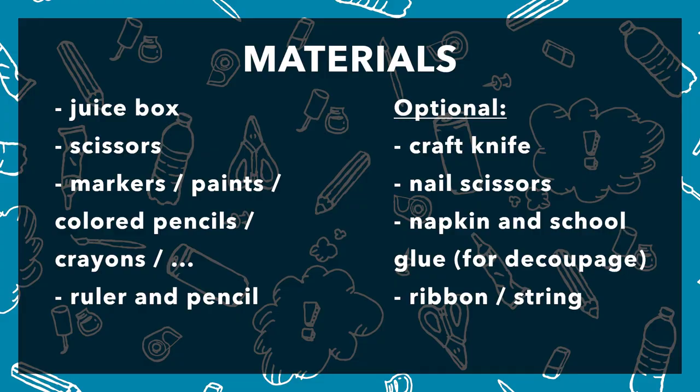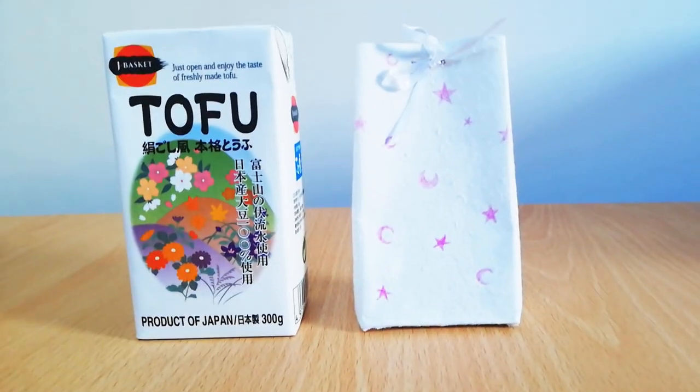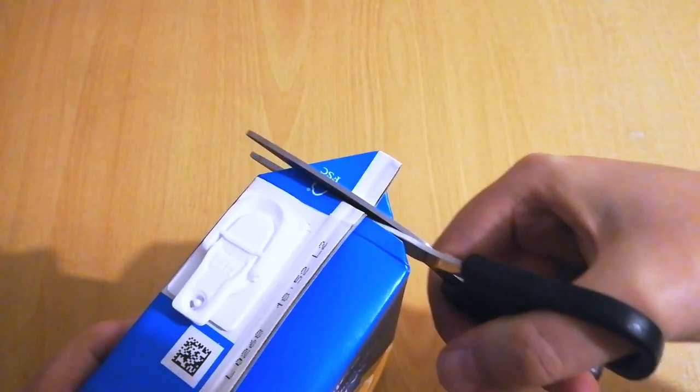So let's look at the materials. First you need to find a juice box or a similar container. Rinse it out very well and cut off the flaps and the top part like this.